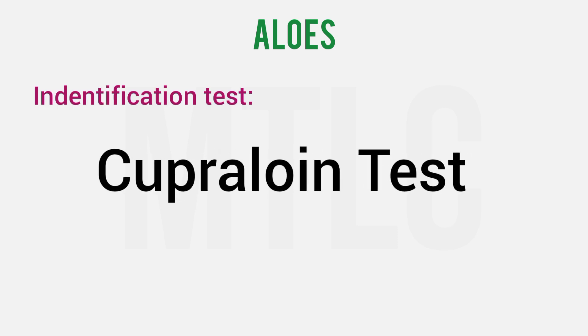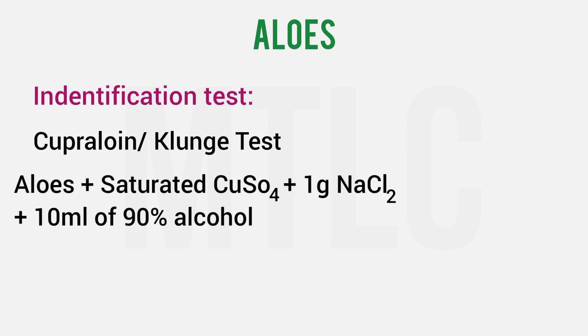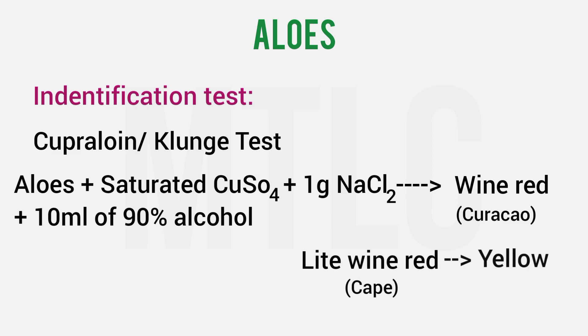Identification tests for aloes. The first is the Cupraloin test, also called the Kunch iso-barbaloin test. Add saturated copper sulphate, 1g sodium chloride, and 10 ml of 90% alcohol. If it is curacao aloes, it will give a wine-red color. For cape aloes, it will give a light wine-red color. It is darker and may show a little yellow color.